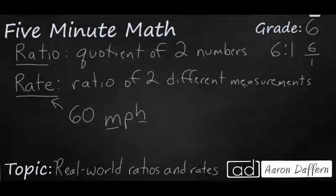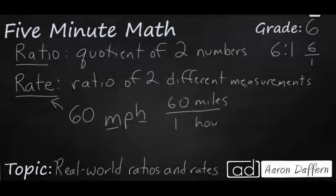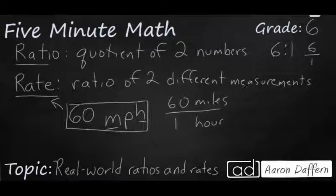So 60, it's really 60 miles over one hour. So every hour we go 60 miles. That is given to us as a rate of 60 miles an hour. Big difference is rates are typically given to us in just a standard number here, like 60 with a single unit of MPH. Whereas your ratio is typically given like this. It's either written sideways or written vertically, and you see both numbers.